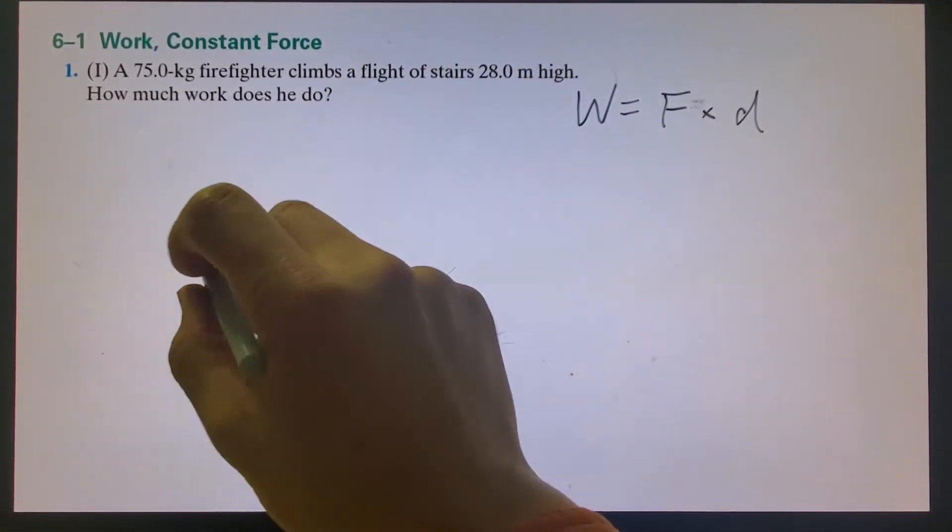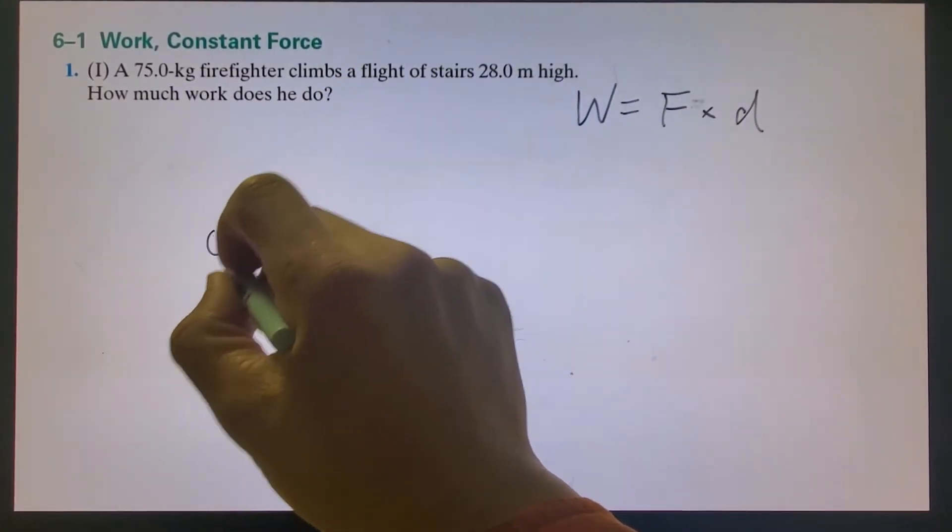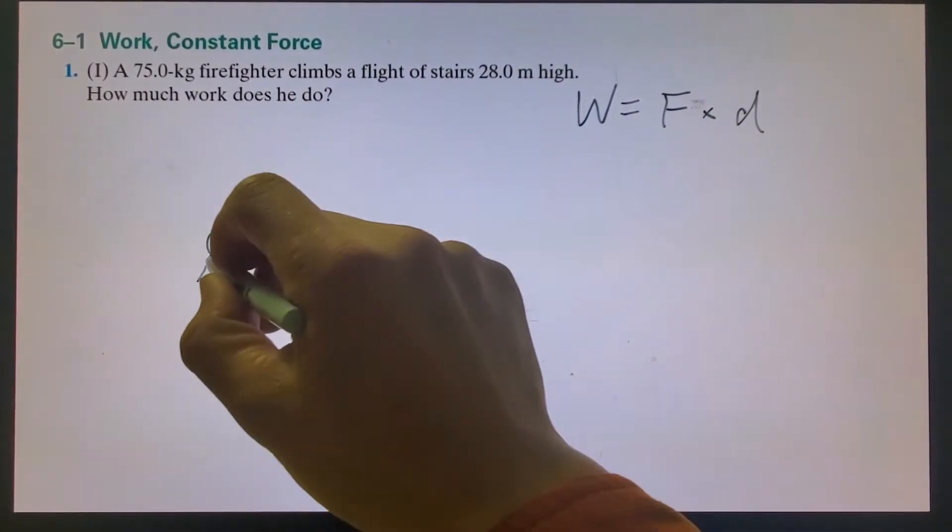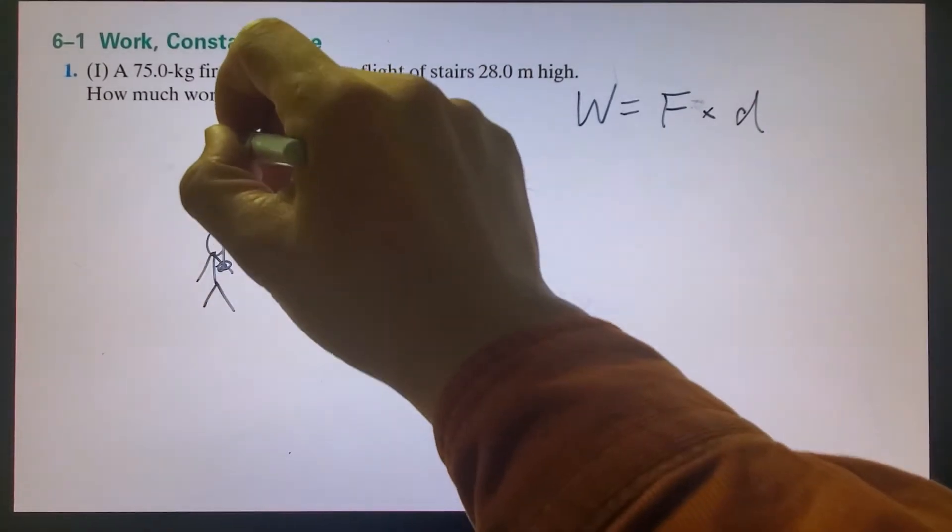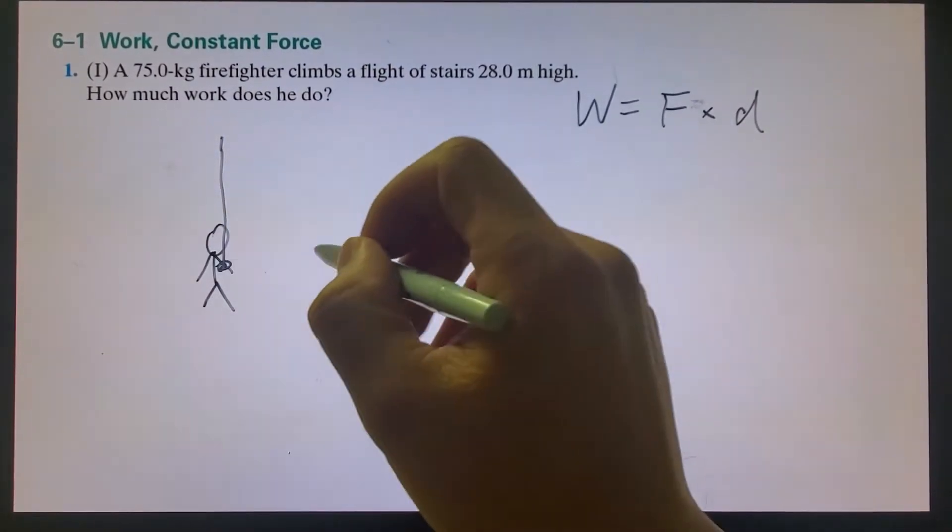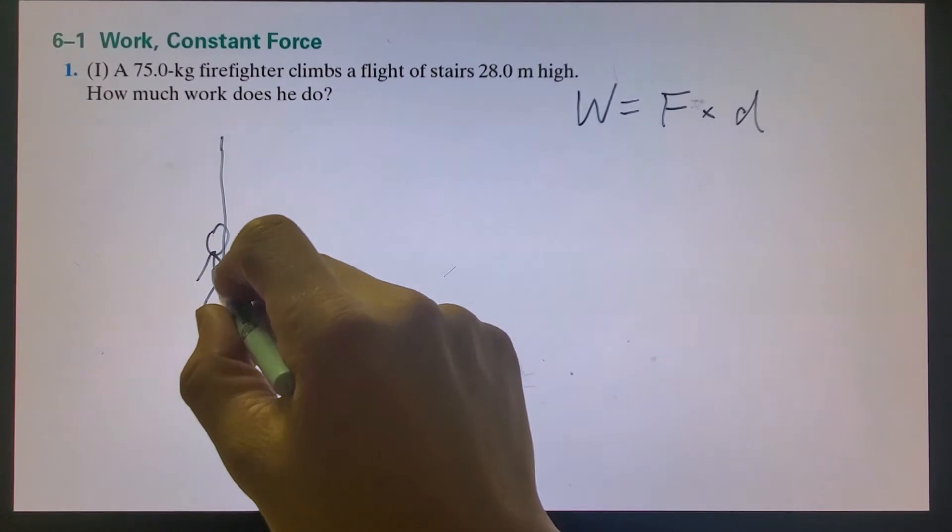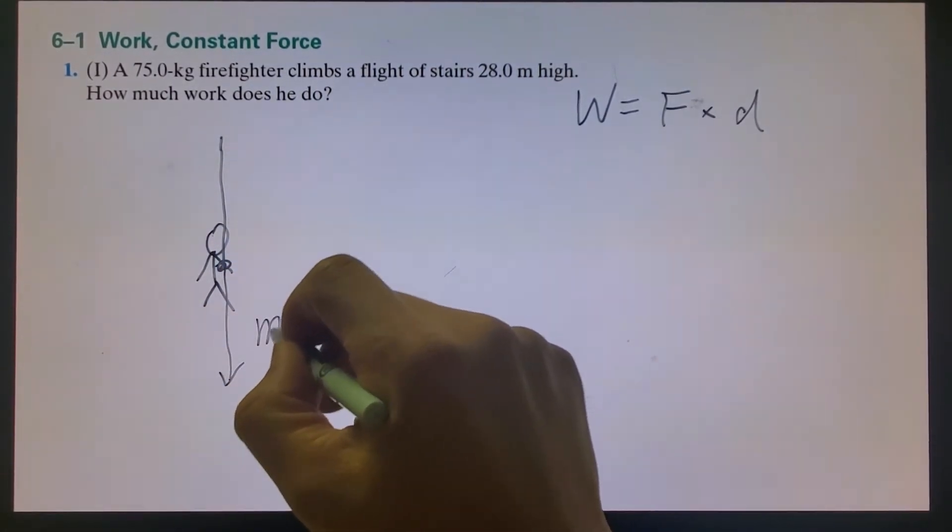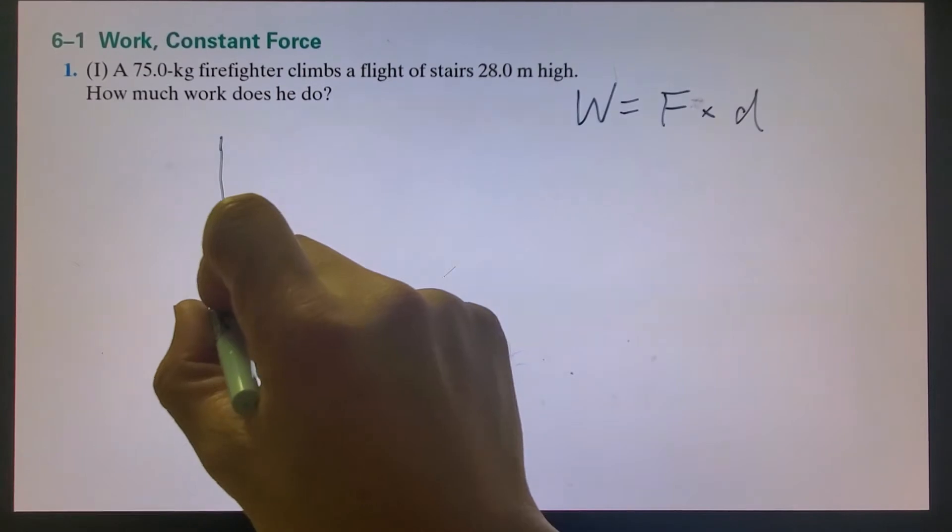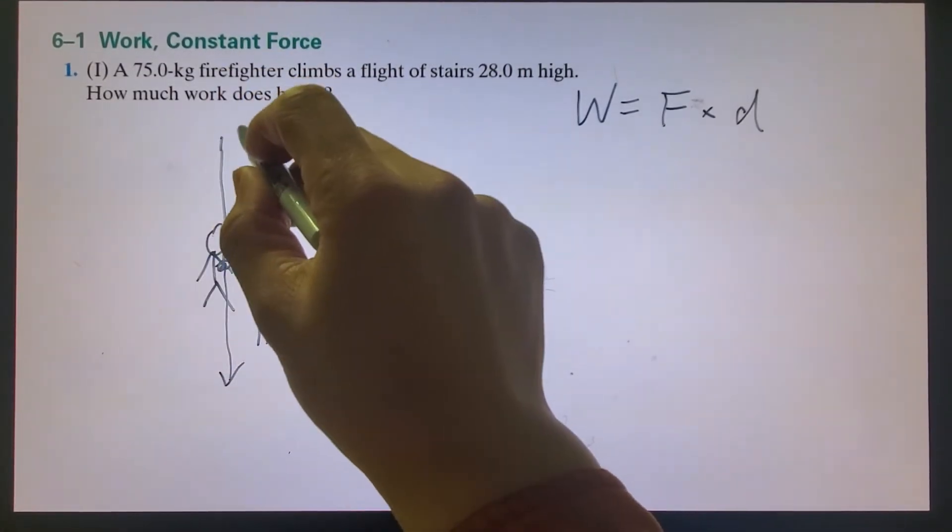In this case, let's draw a free body diagram. Here's a firefighter. If he just hangs up on a rope, what would be the force acting on him? It would be gravity. Gravity is mg. If he just hangs still, there will be a tension.